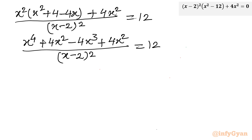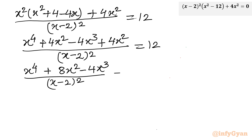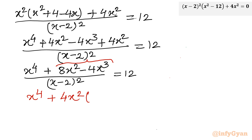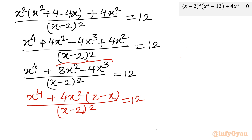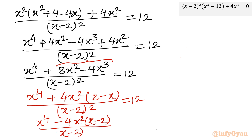Combining like terms: the 4x squared terms give x to the power 4 plus 8x squared minus 4x cubed in the numerator. Taking 4x squared common from the last two terms, and also considering a minus sign, I can write x to the power 4 minus 4x squared times x squared times (x minus 2) whole square, all over (x minus 2) whole square, equal to 12.